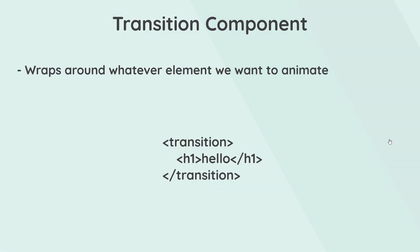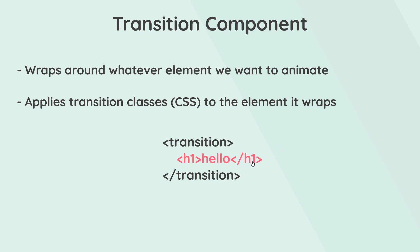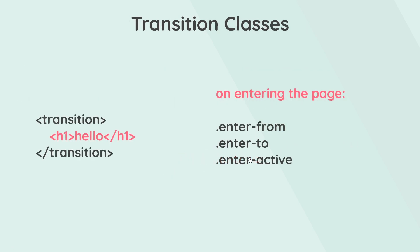All animations in this course are going to be controlled by a built-in view transition component. This component wraps around whatever elements we want to animate or transition, and when we do that it applies transition classes to the element. There are six classes that it applies, which allow us to control the animation. The first three are enter-from, enter-to, and enter-active, and these allow us to control the animation of the element onto the page.